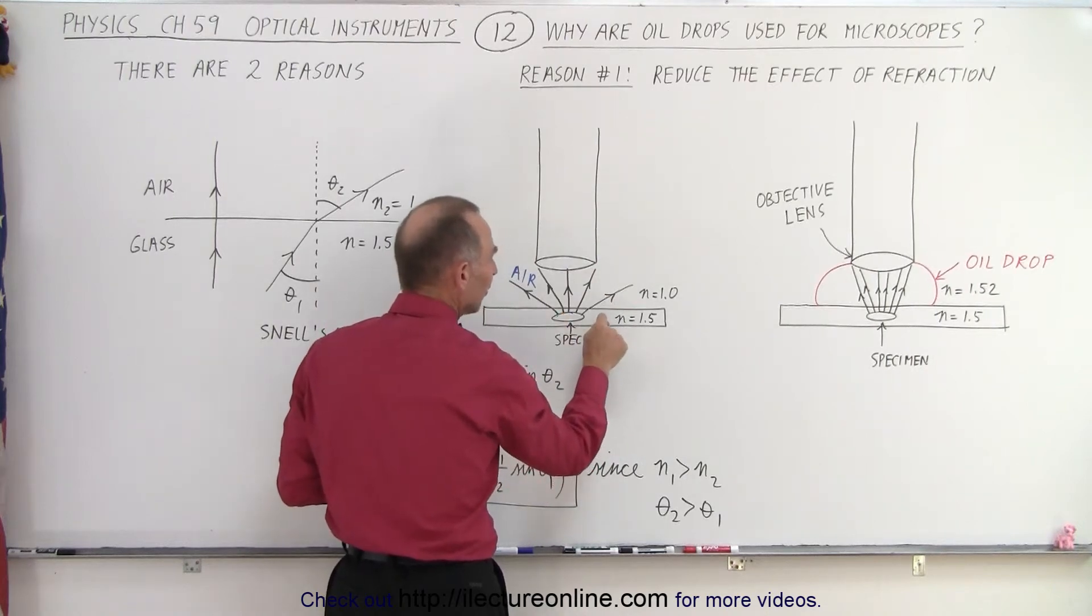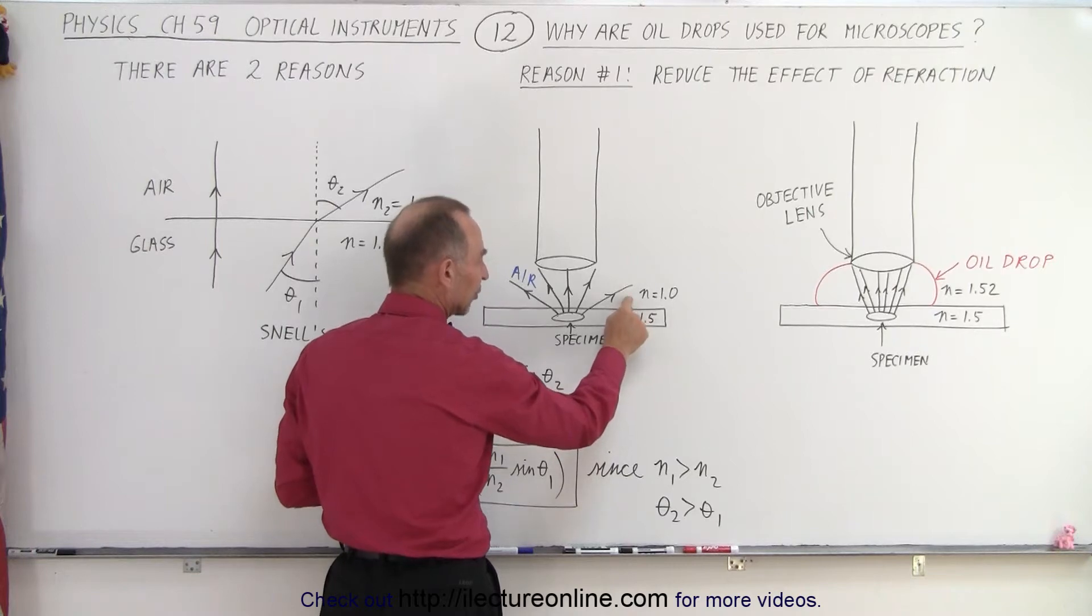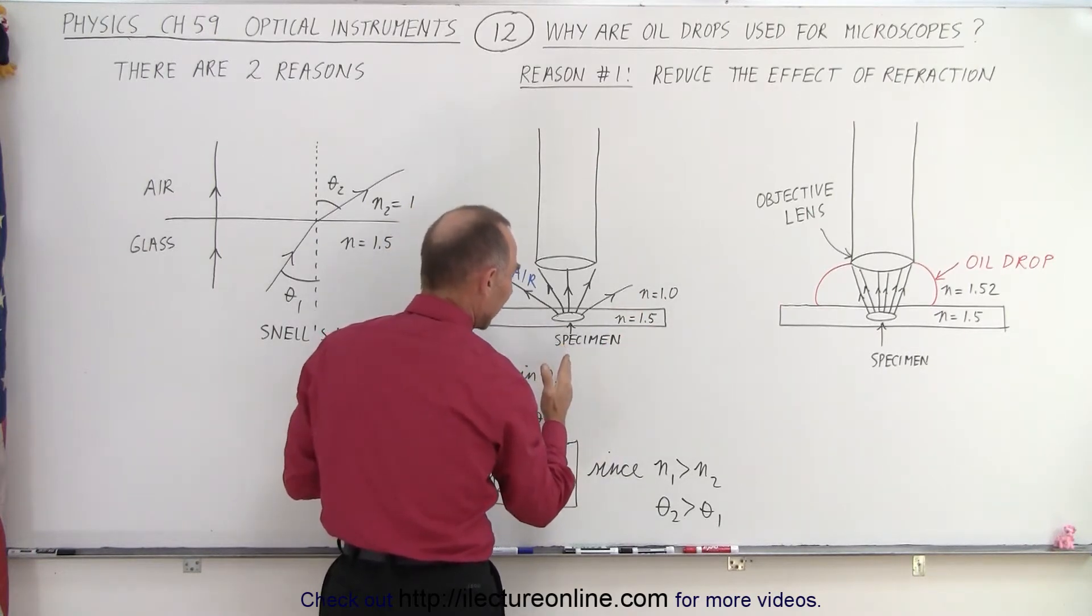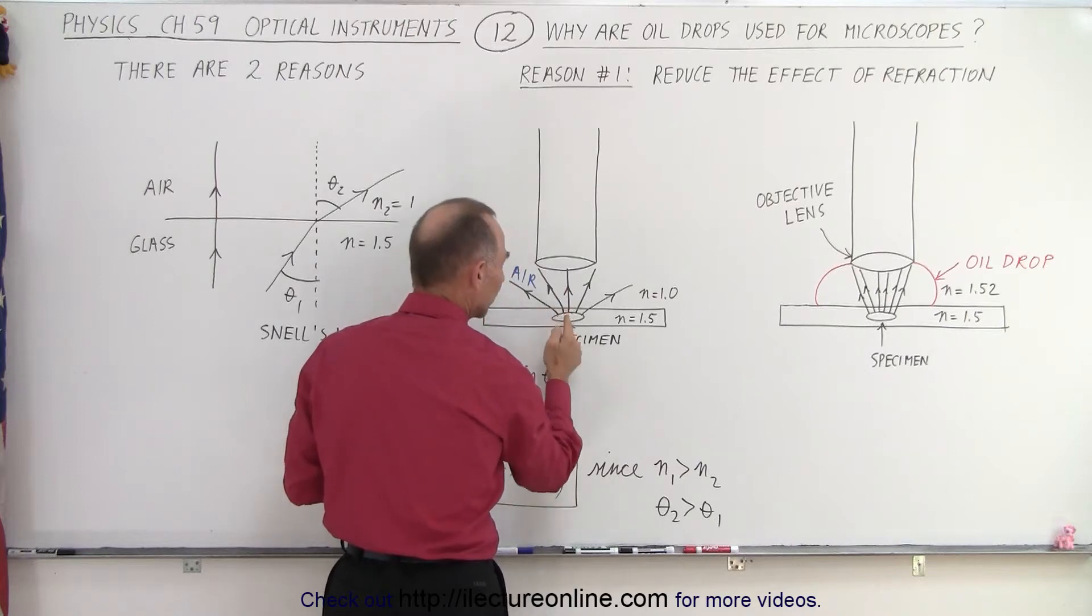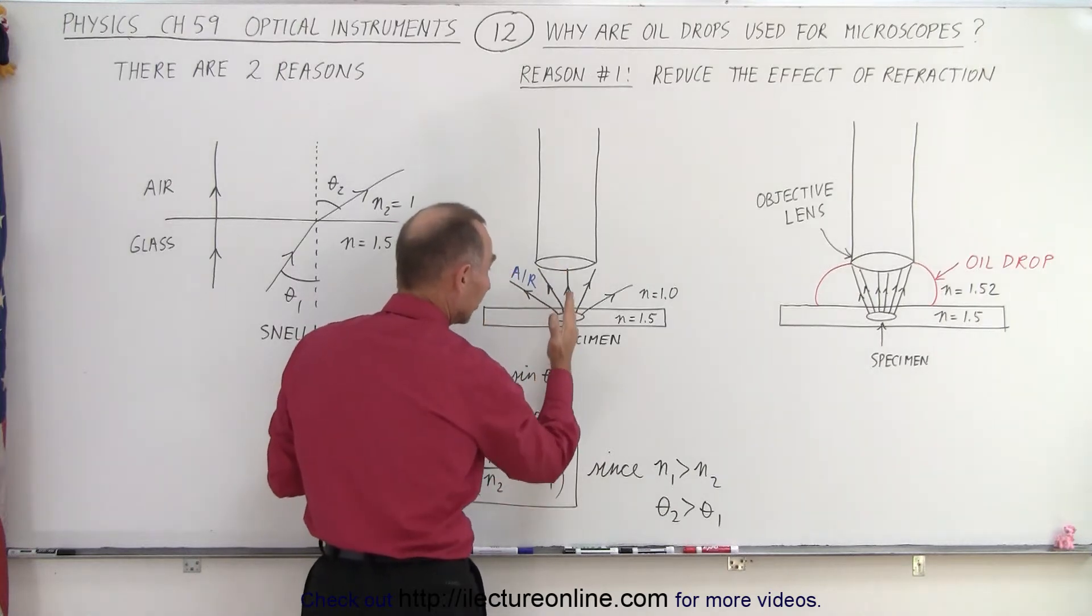But notice, since the index of refraction of glass is about 1.5 and the index of refraction of air is 1, you can see that if the rays of light go straight across where the angle is 0 degrees relative to the perpendicular, so even to the optical axis, then you can see that the light goes straight into the lens.